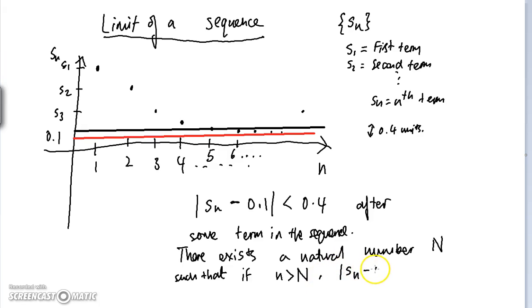such that if we take all the terms after the big Nth term of the sequence, the distance between the terms of the sequence and 0.1, which is what we said that this sequence converges to, can be made less than 0.4.